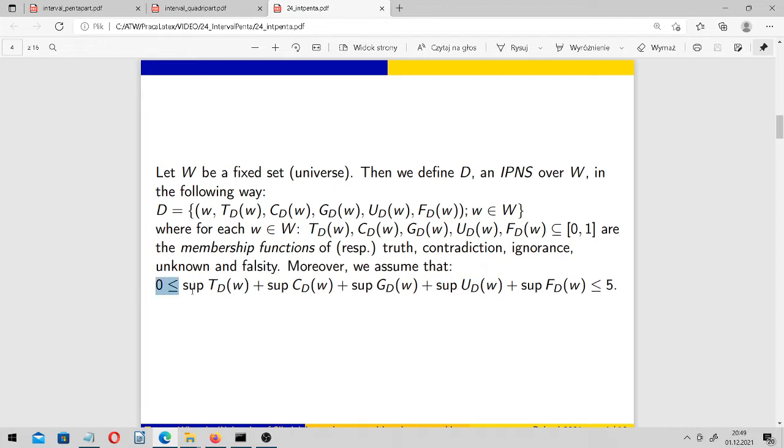We have this assumption that if we take supremum of these intervals and their sum, then this sum does not exceed 5, is not bigger than 5, and it's greater or equal to 0.